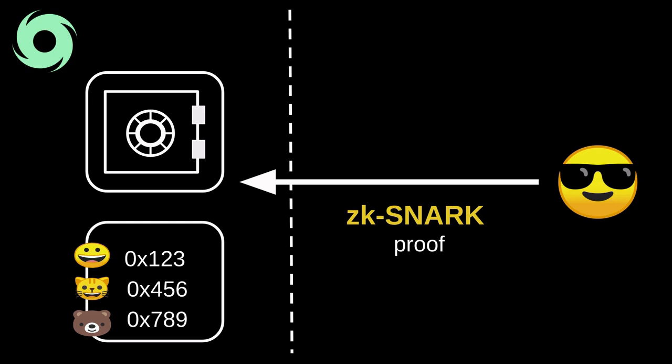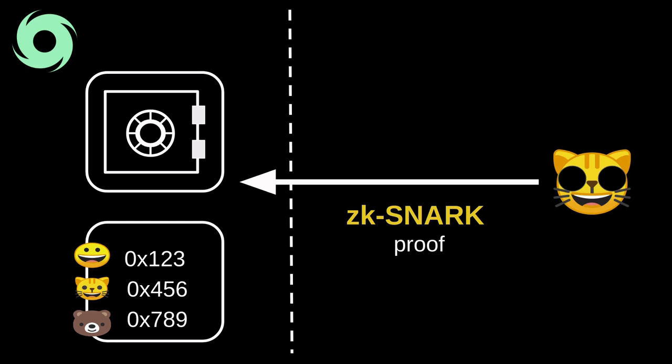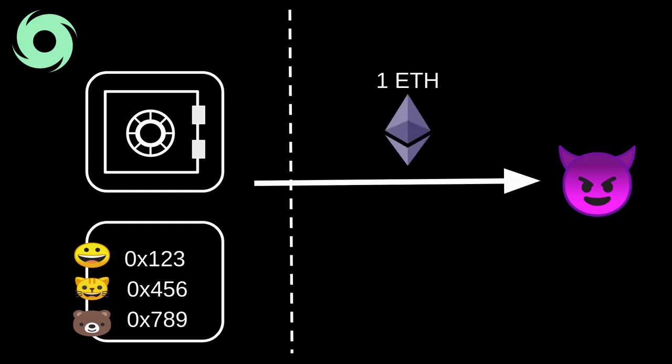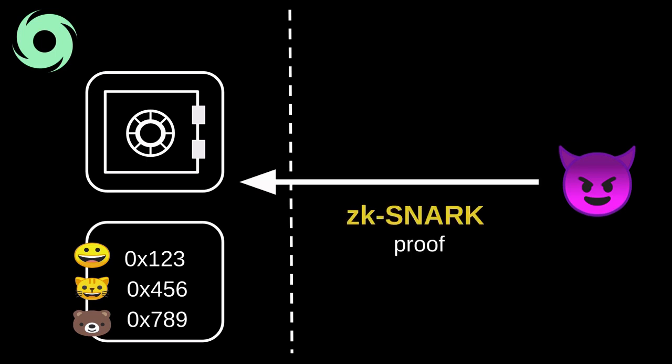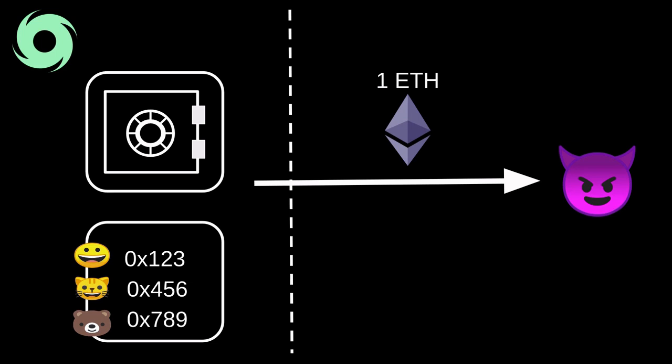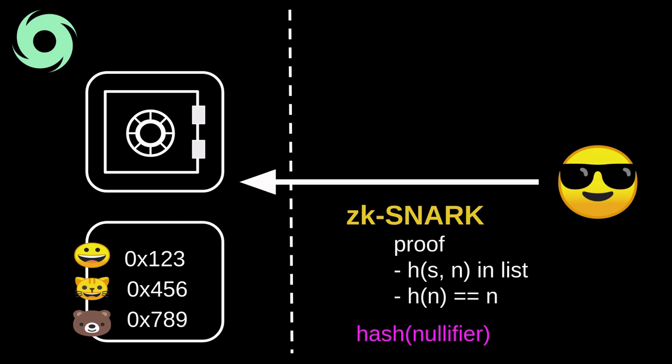When an anonymous user withdraws from Tornado Cash, Tornado Cash doesn't know who is withdrawing. The withdrawer can be Alice, Bob the bear, or Charlie the cat. This means that Tornado Cash cannot keep track of who has withdrawn their deposits. So a clever hacker would say: Tornado Cash doesn't know who withdrew, so I'm going to try to deposit once and then withdraw multiple times. The hacker sends a proof to withdraw, the proof checks out and the hacker gets one ETH. The hacker sends the same proof again and withdraws one ETH again. In total, the hacker deposited one ETH but was able to withdraw two ETH.